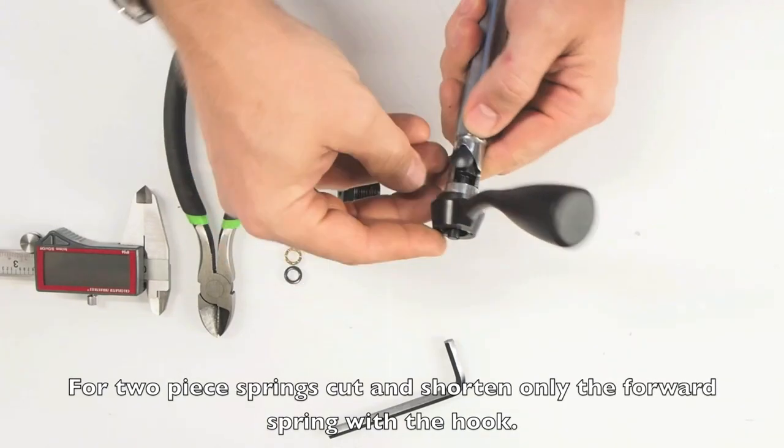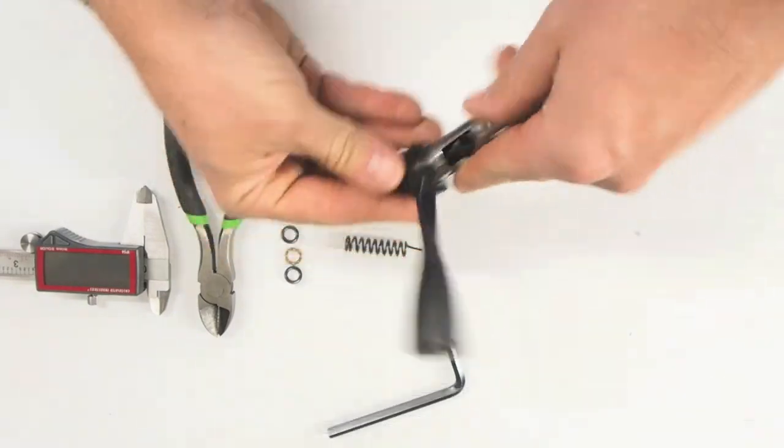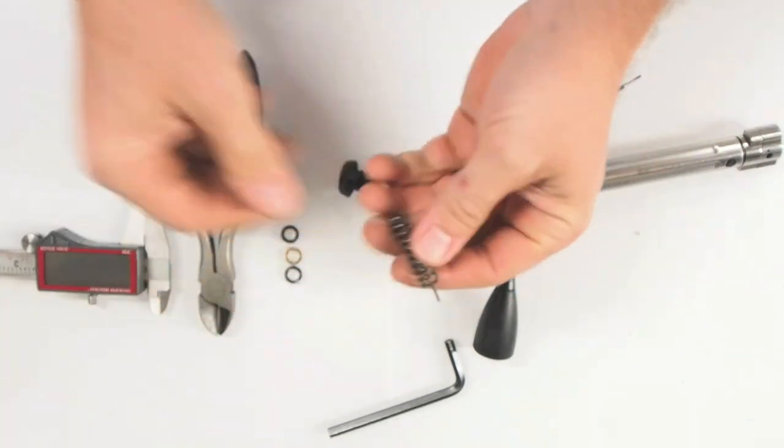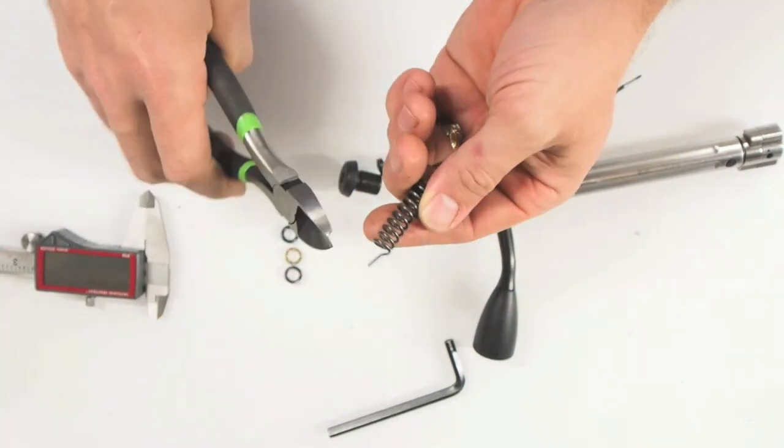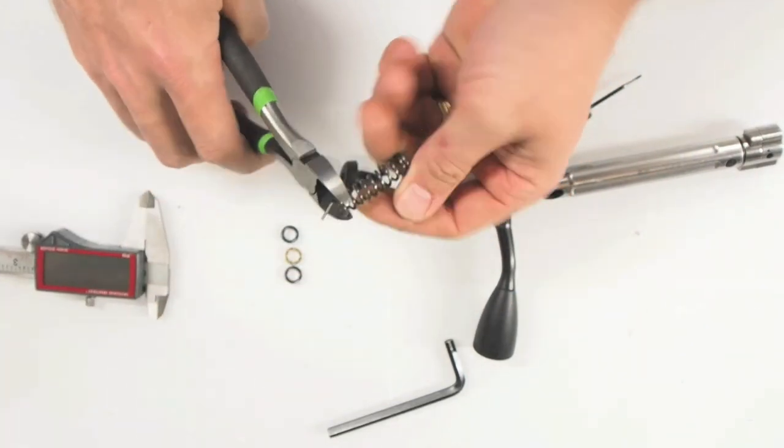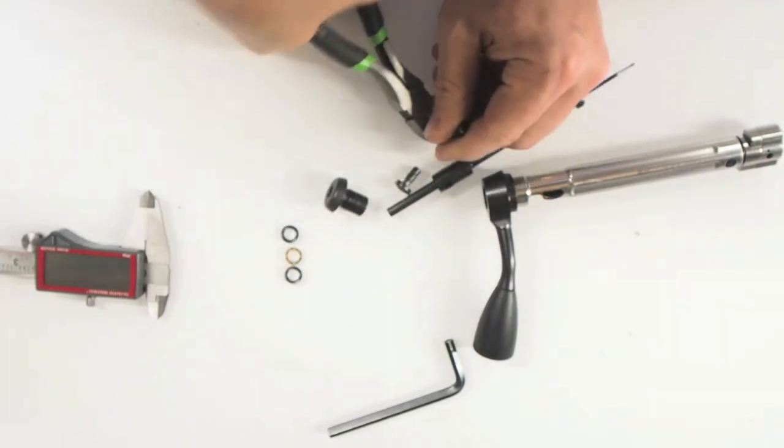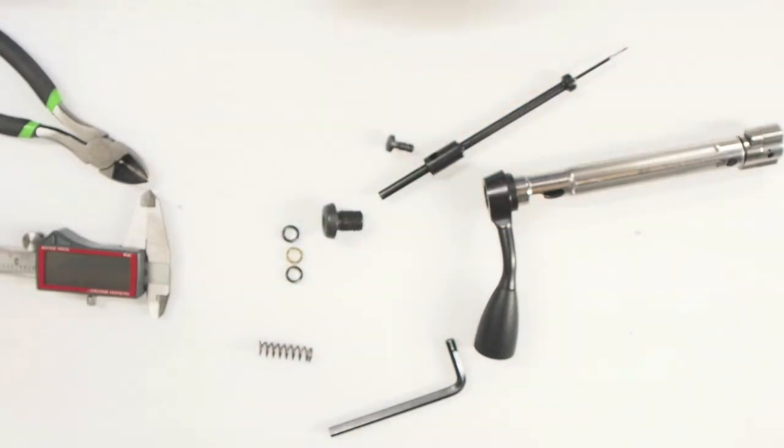First thing we're going to do is take the spring. Because we have one here that is one piece, I'm actually going to cut it. It's pretty hard to cut. Then I'm going to take the two ends here and step over to the grinding wheel.